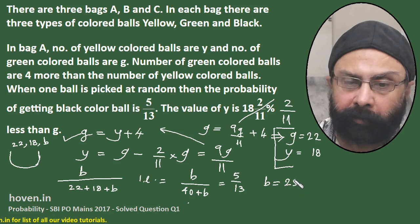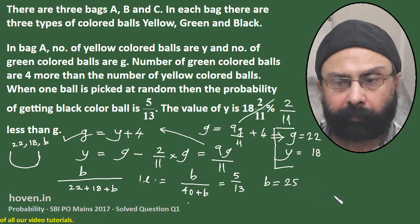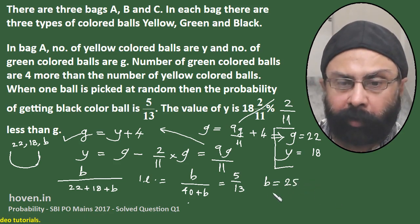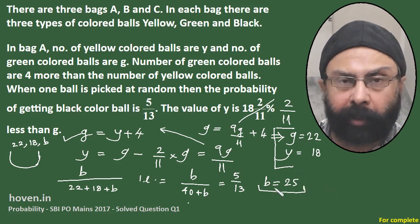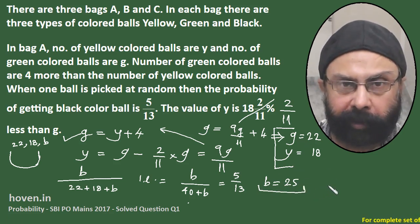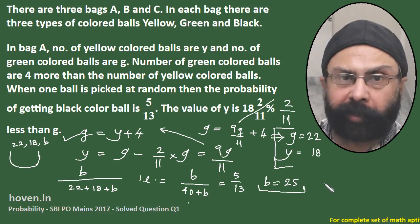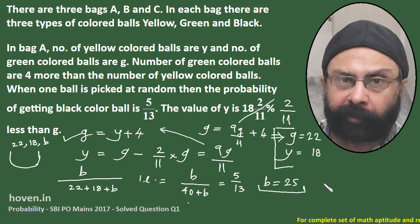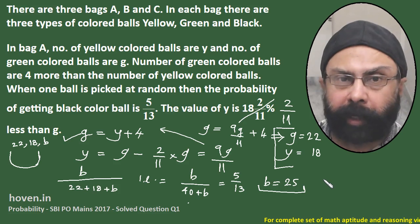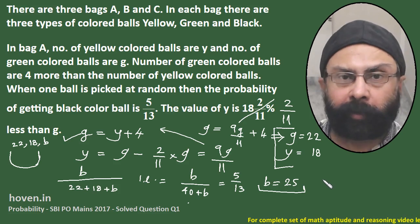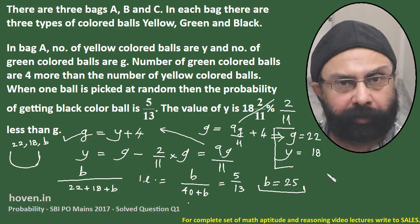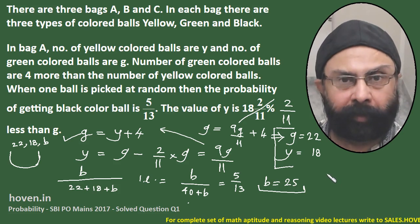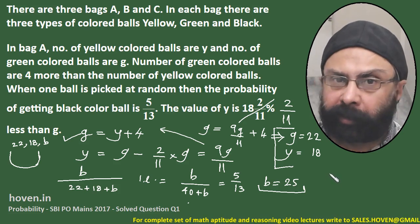So now I have all the contents of bag A: green = 22, yellow = 18, and black = 25. I will note it down and proceed to bags B and C, because I must solve those bags before I am able to answer the questions. Let us move to bags B and C now.